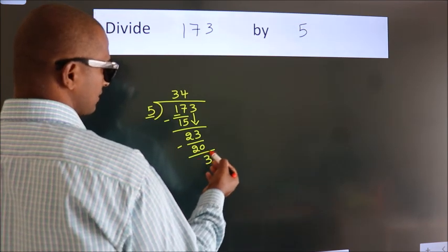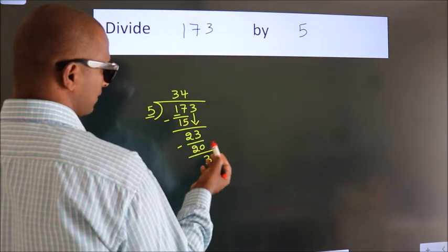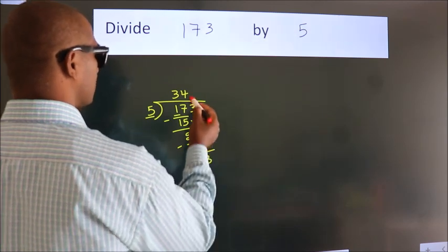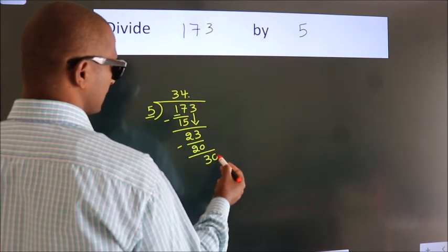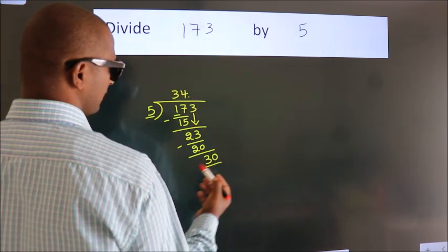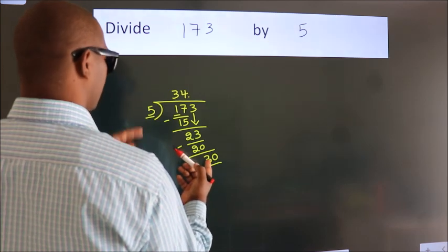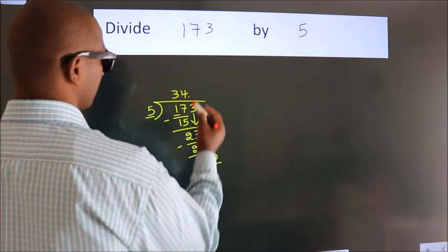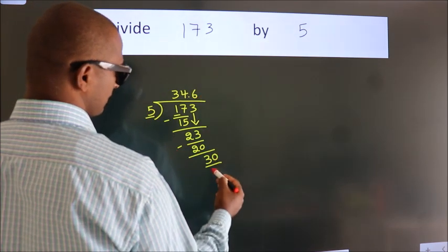After this, no more numbers to bring down. So what we do is we put a dot and take 0. So 30. When do we get 30 in the 5 table? 5 times 6, 30.